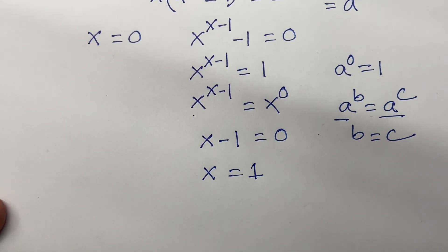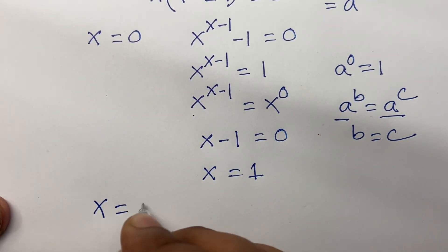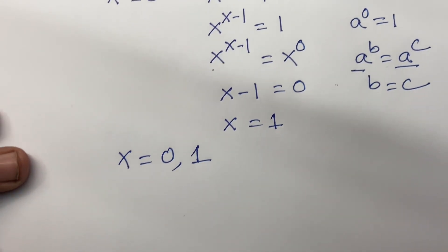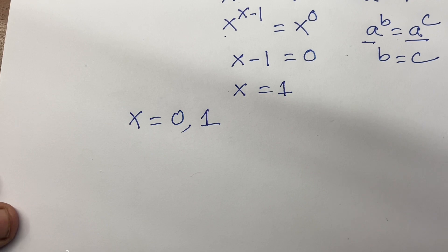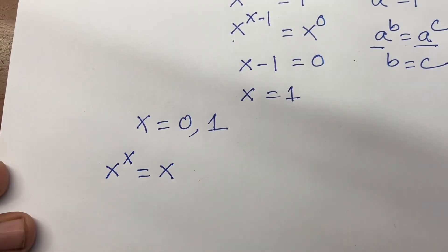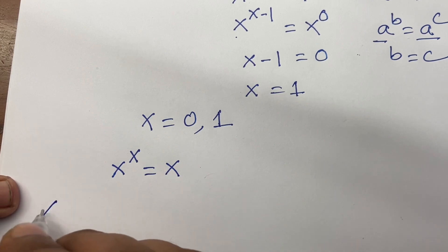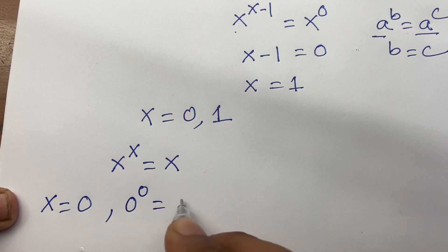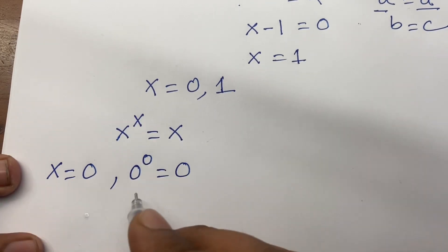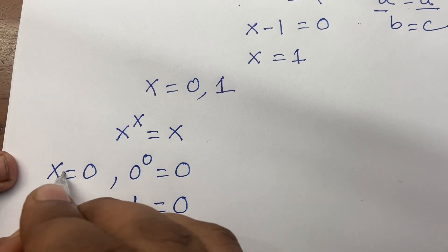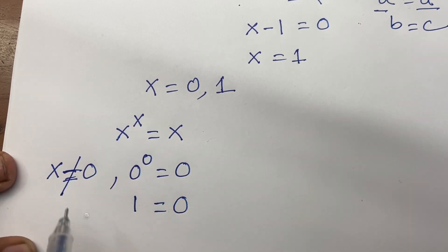Now we find that x values are 0 and 1. Let's justify by proving in our first equation x to the power x equal to x. When x equals 0, we get 0 to the power 0 equal to 0. But we know that 0 to the power 0 equals 1, not 0. So x equal to 0 is rejected — it is undefined.